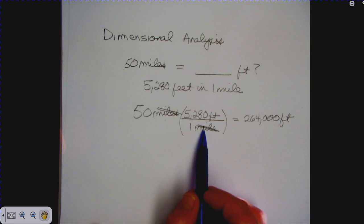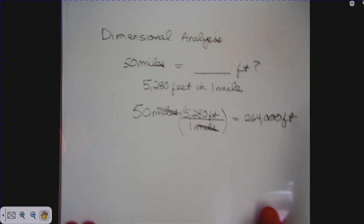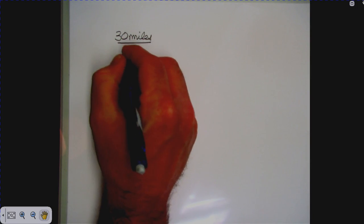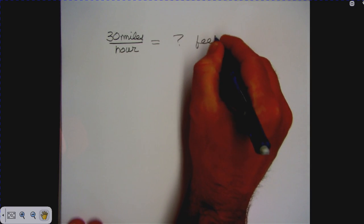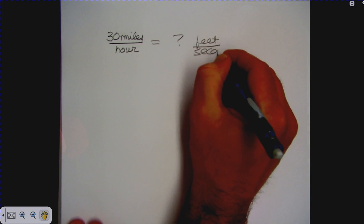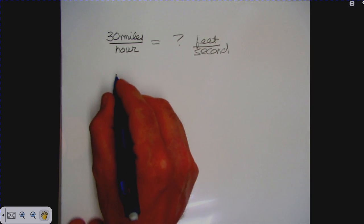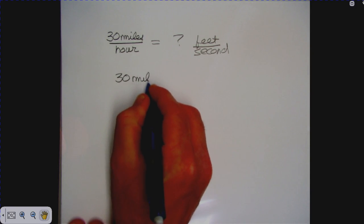Dimensional analysis becomes even more useful with rates, and you'll use this a lot in chemistry and physics in high school and college. Let's say I have a rate of 30 miles per hour and want to know how many feet per second that is. Here's how we do it using dimensional analysis — I write down 30 miles per hour.